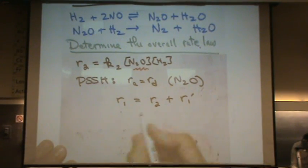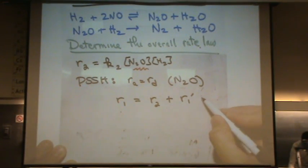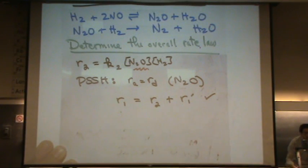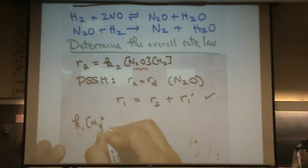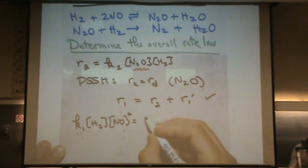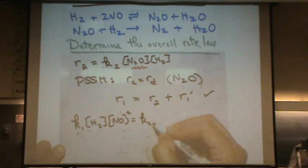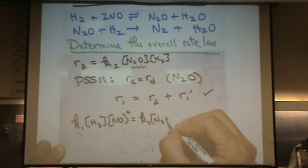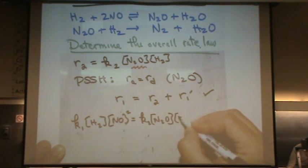And this, you'll notice, is going to be a very common sort of equation that comes out of using this PSSA. Okay, so rate one, that's, what is that? K1H2NO squared equals rate two, which is K2, N2O, H2.